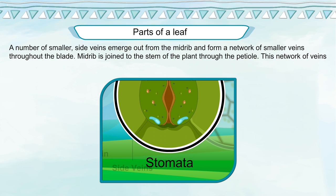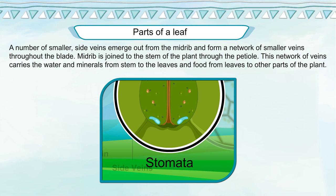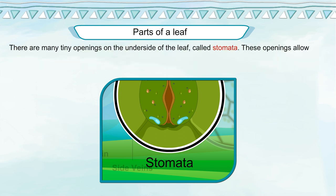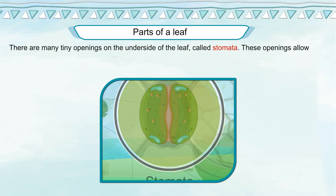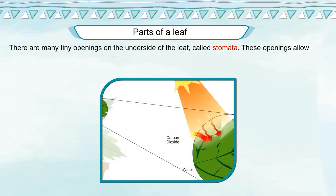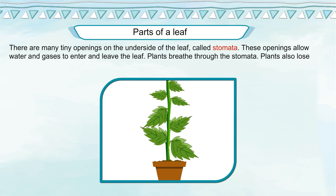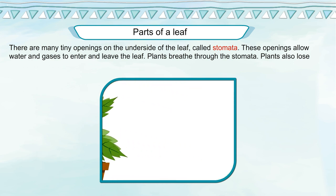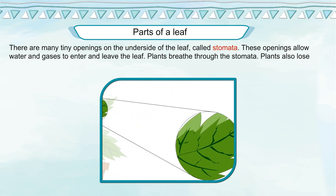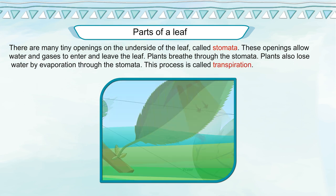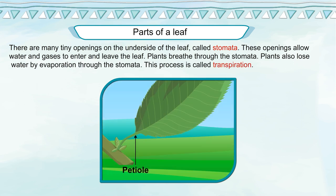The midrib is joined to the stem of the plant through the petiole. This network of veins carries water and minerals from the stem to the leaves, and food from the leaves to other parts of the plant. There are many tiny openings on the underside of the leaf called stomata. These openings allow water and gases to enter and leave the leaf. Plants breathe through the stomata and also lose water by evaporation through them — a process called transpiration.